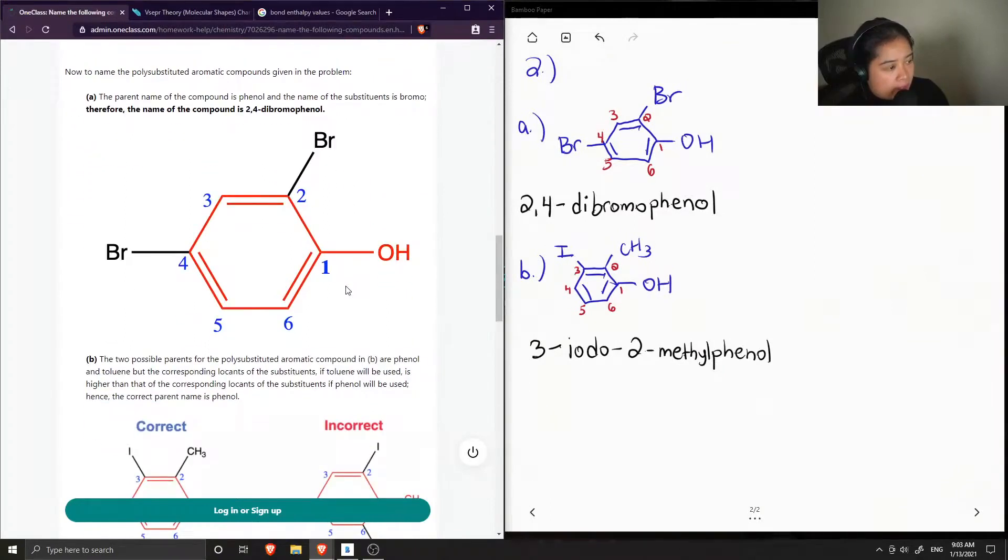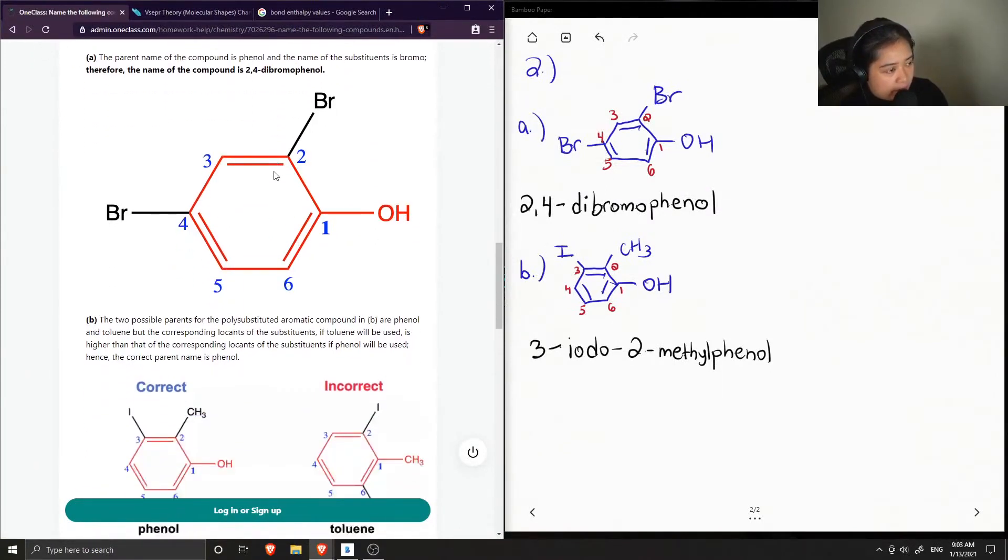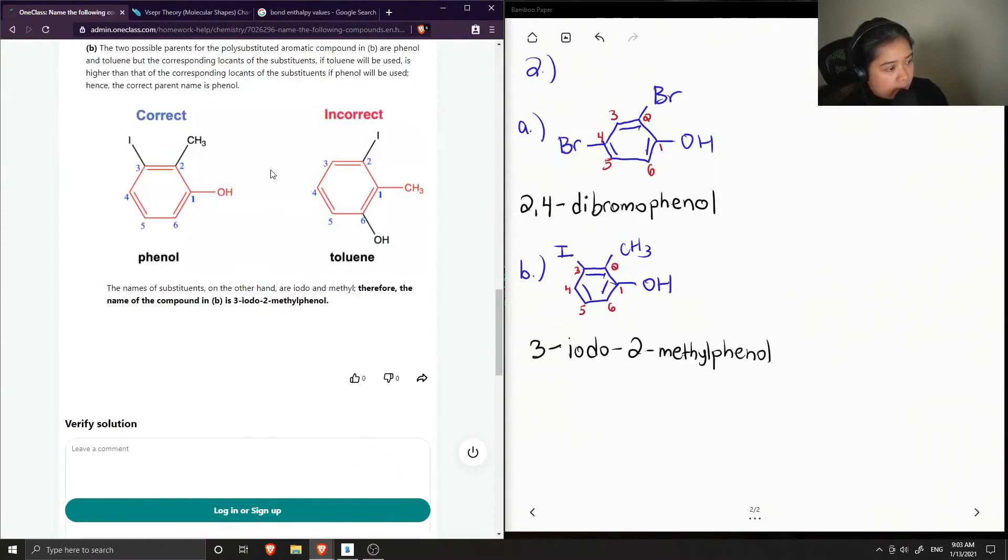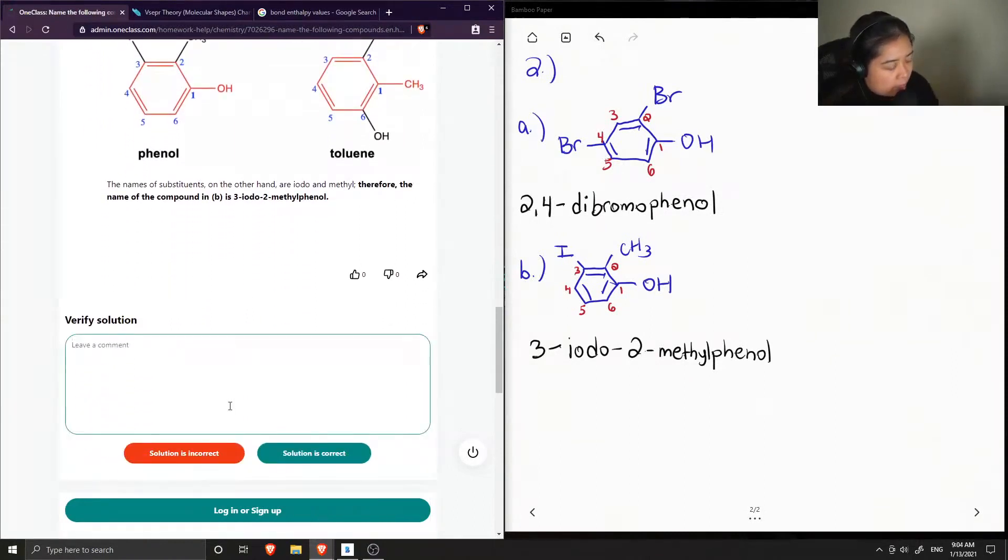Okay, so now they get into our question. So they said the name is 2,4-dibromophenol, which is correct. And for part B, they said it is 3-iodo-2-methylphenol. Yep. So this solution is correct.